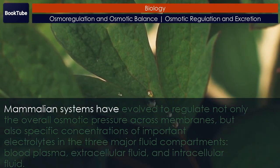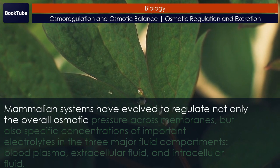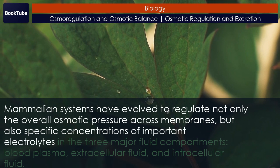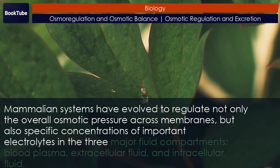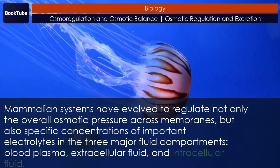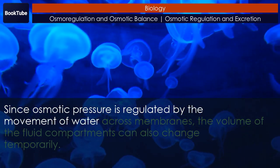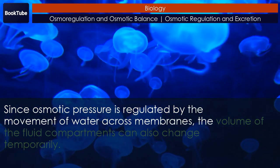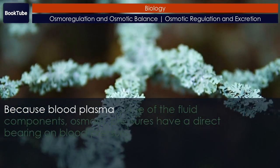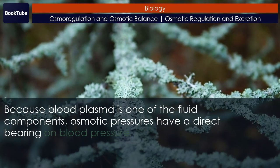Mammalian systems have evolved to regulate not only the overall osmotic pressure across membranes, but also specific concentrations of important electrolytes in the three major fluid compartments: blood plasma, extracellular fluid, and intracellular fluid. Since osmotic pressure is regulated by the movement of water across membranes, the volume of the fluid compartments can also change temporarily. Because blood plasma is one of the fluid components, osmotic pressures have a direct bearing on blood pressure.